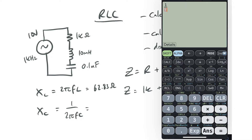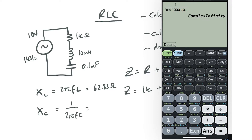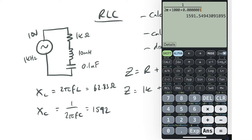Now for the capacitor: 1 over 2π times 1000 times the capacitance. This is 0.1 microfarads, so that's 1 over 2π × 1000 × 0.0000001, which gives us 1591.55 — let's just round that to 1592.